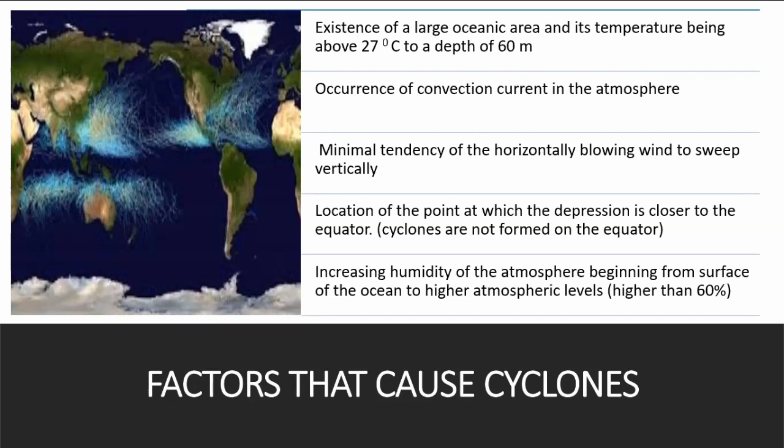Increasing humidity of the atmosphere beginning from the surface of the ocean to higher atmospheric levels. Humidity is the amount of water content in the atmosphere. When this becomes higher than 60 percent, it causes cyclones. As cyclones are born on meeting these conditions, cyclones are restricted only to some oceanic regions on the earth.